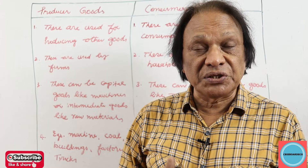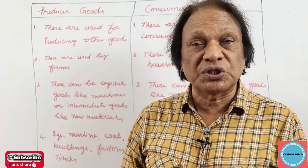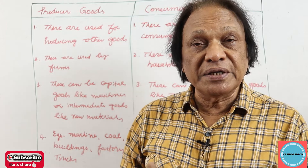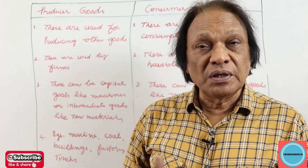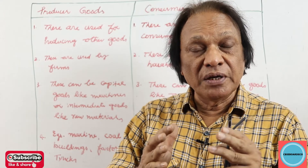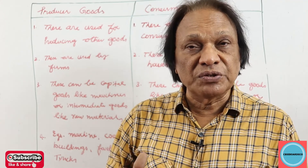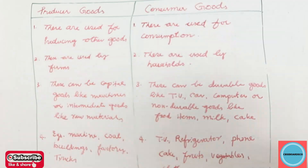In the last video we have seen differentiate between goods and services. In this video we talk about the differences between producer goods and consumer goods. Look at the board — producer goods and consumer goods.